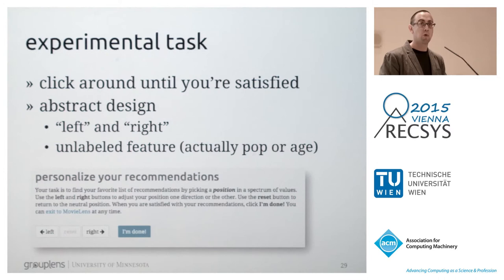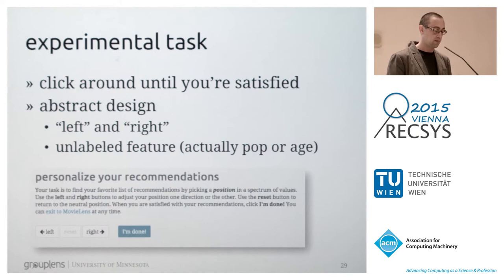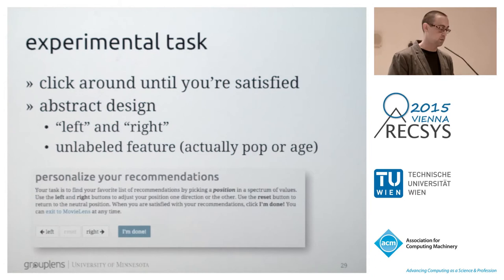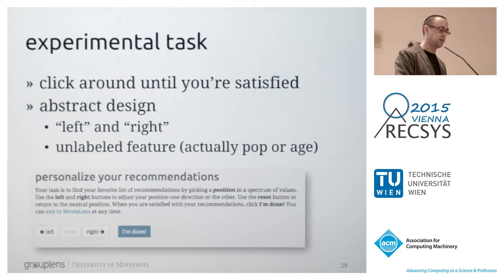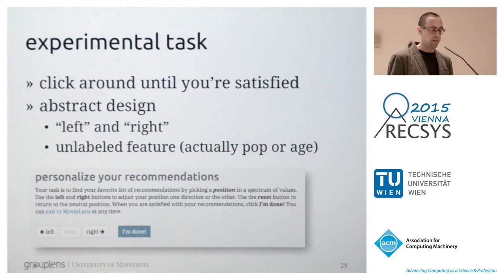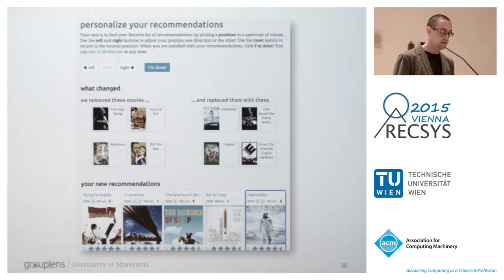We gave users instructions to click buttons labeled left, right, and reset until they found their favorite list of recommendations. When they entered the task, item-item collaborative filtering was set to 100% and the other factor — popularity or age — was at 0%, which we call the origin. Users could return to the origin by clicking reset. Traveling farther right biased the list towards popular or newer movies; farther left biased it towards obscure or older movies. The buttons were labeled left and right rather than 'more popular' to avoid cognitively biasing their actions or responses.